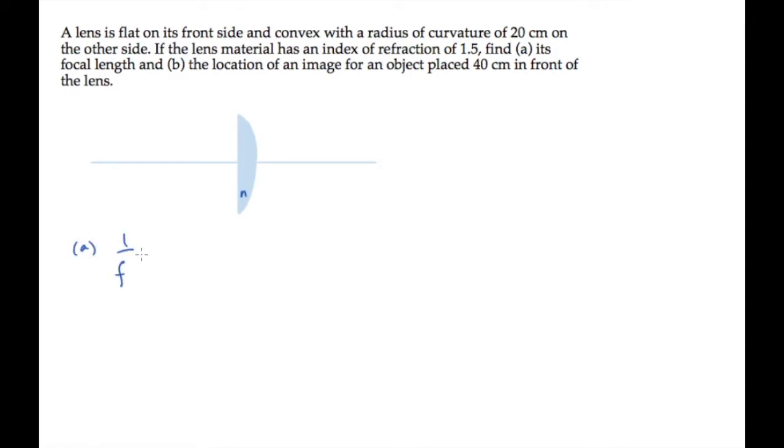We'll do this using the lens maker's equation. 1 over f equals n minus 1 times 1 over r1 minus 1 over r2, where r1 is the radius of curvature of the front side.